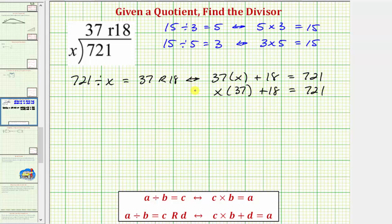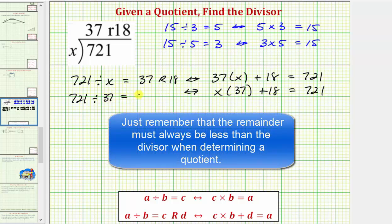Now if we write the quotient from this, notice how we would have 721 divided by 37 equals x with the remainder of 18. So let's find the value of x which is the original divisor by finding this quotient here.